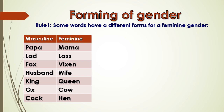Now, in this section, we will learn about the methods through which we can change words of masculine gender into words of feminine gender. The first method is by changing the masculine word into a different word. Some words have a different form for the feminine gender.